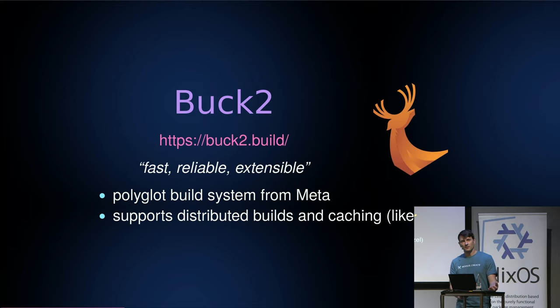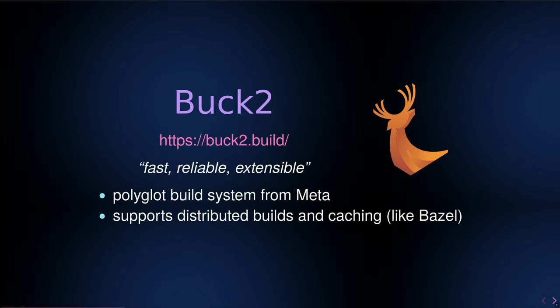So we asked ourselves: what kind of build system can cope with the scale of the Mercury codebase? There are a few hundred developers, there is constant change, and we are going with Buck2. Buck2 is a fairly new build system by Meta. Its punchline is fast, reliable, extensible. It's in a similar realm as Bazel.